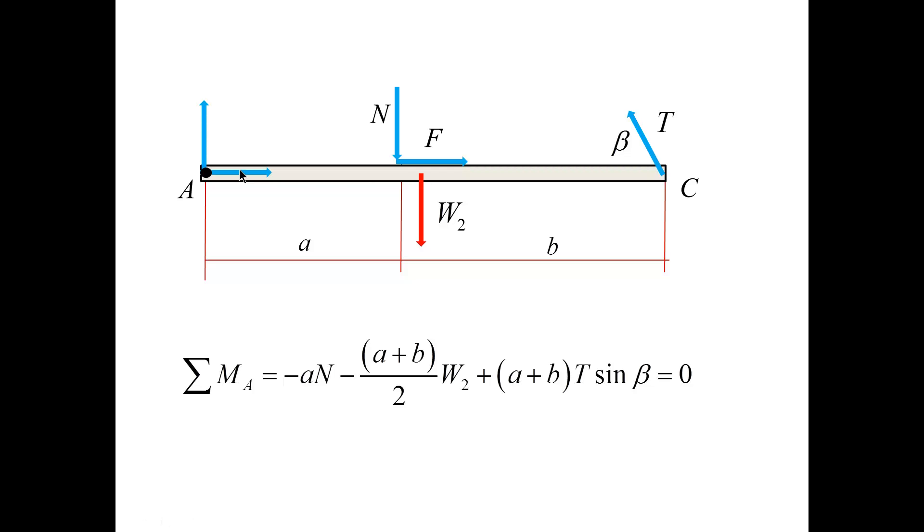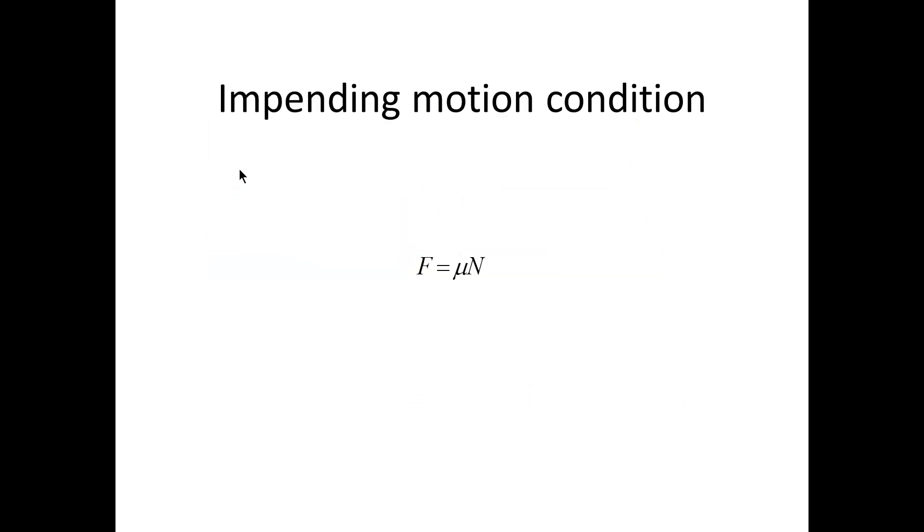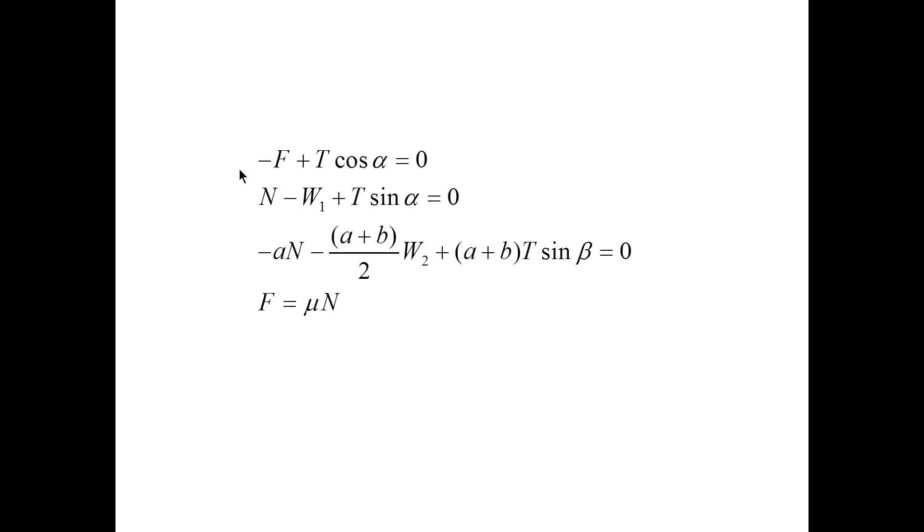Finally we combine the equilibrium equations with the impending motion condition. And now we combine the two equilibrium equations for the block, one equilibrium equation for the beam, the impending motion conditions for four unknowns F, T, N, and μ.